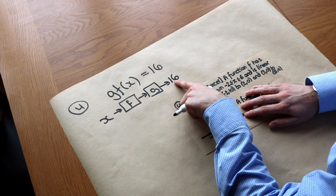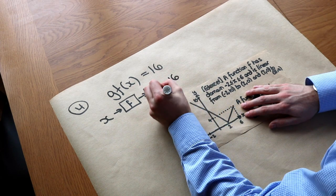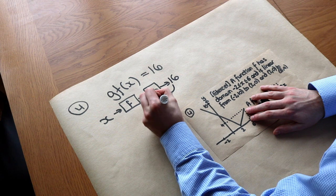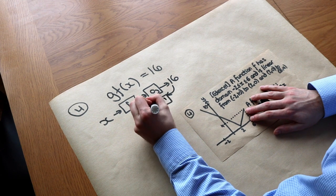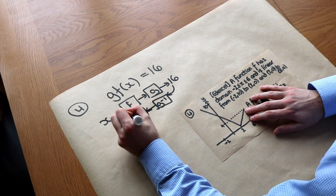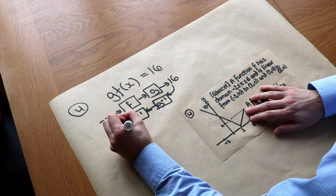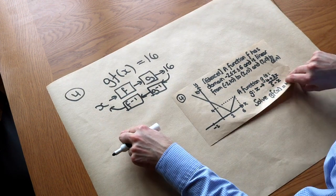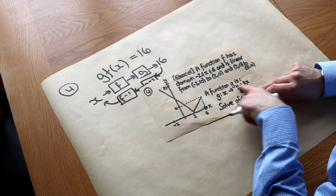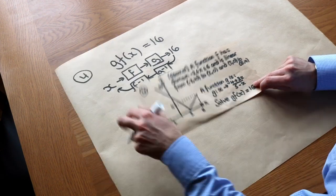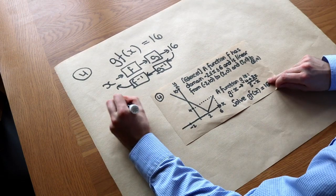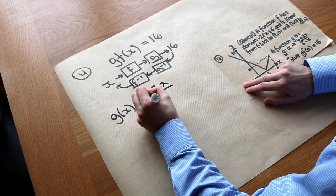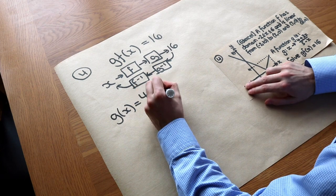Working backwards: starting from 16, we feed it through g⁻¹ and then through f⁻¹ to recover x. To find g⁻¹ we need the inverse of g(x) = (4 + 3x) / (5 − x).